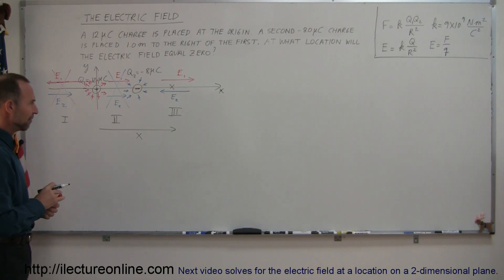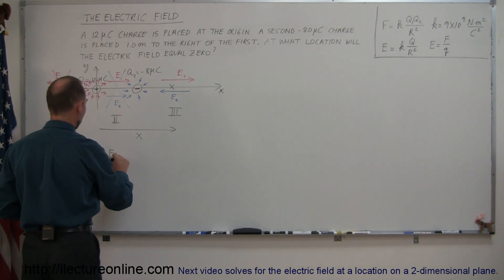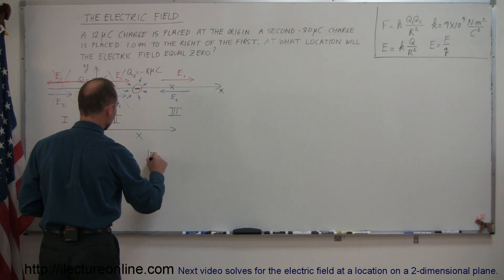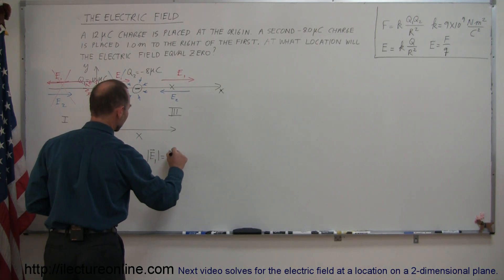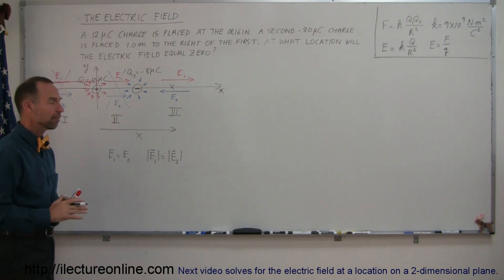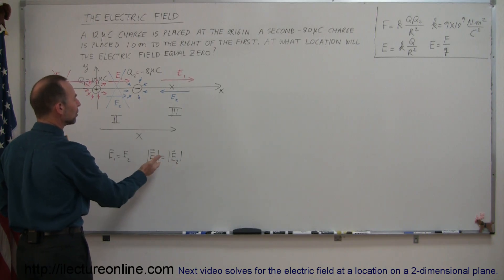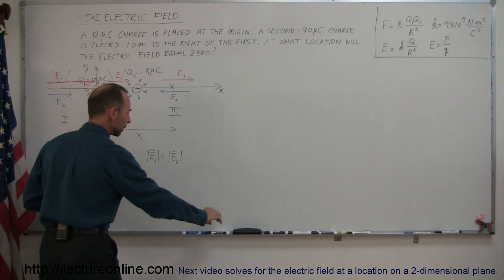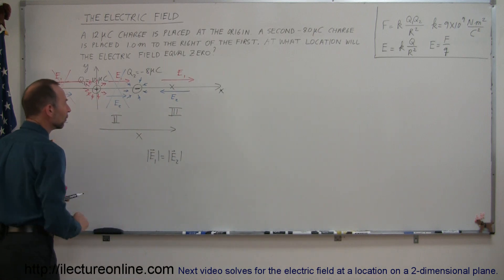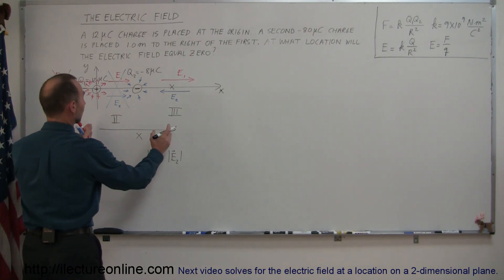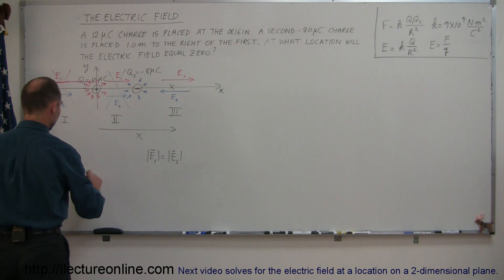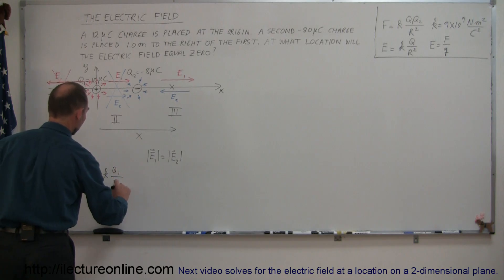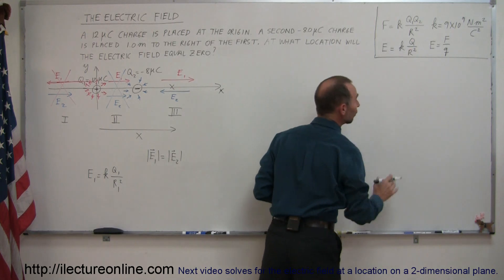If we find the right location, the magnitude of E1 must equal the magnitude of E2. Using absolute value symbols makes clear we only care about magnitudes, not direction or sign. Let's calculate E1 and E2 at an arbitrary location a distance x from the origin. E1 equals K times Q1 divided by R1 squared, using the point-charge electric field equation.